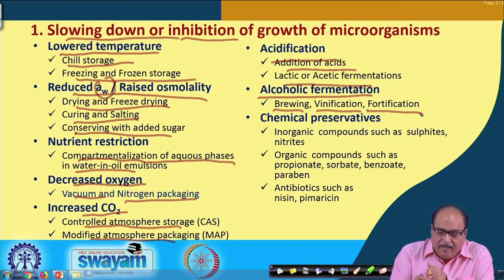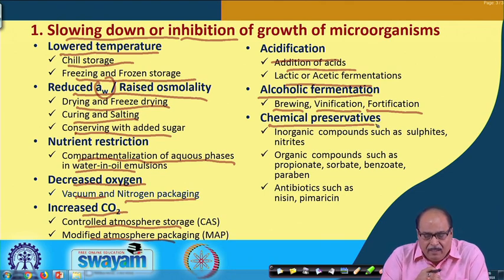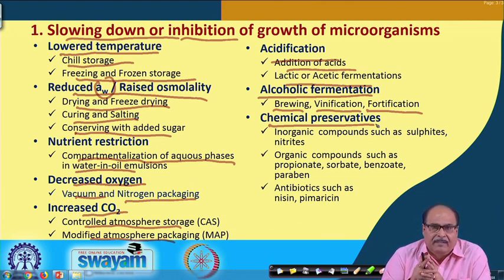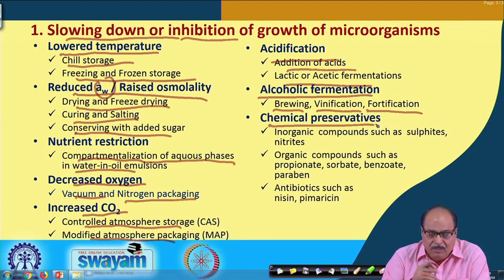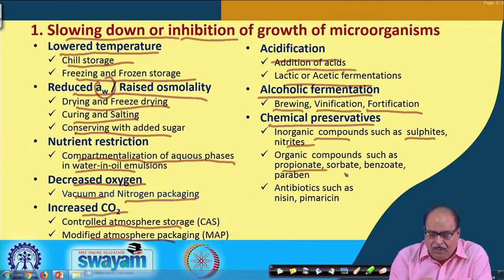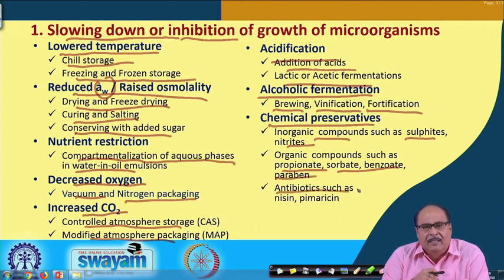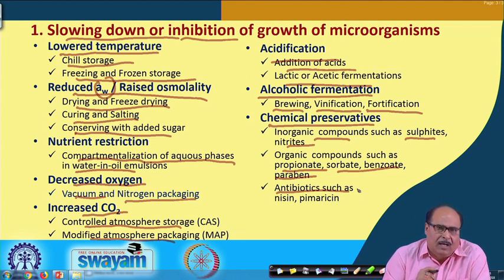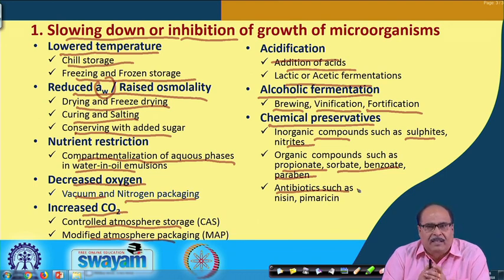Another important method involves changing the acidity or alkalinity of the food material — mostly the acidity. In this case, there are certain chemical preservatives which can be used — inorganic compounds like sulphites and nitrites, organic compounds such as propionate, sorbate, benzoate, and parabens, or antibiotics like nisin and pimaricin, which may influence the growth or complete inhibition of microorganisms. These are one set of technologies traditionally used for preservation of food.